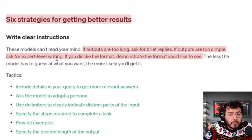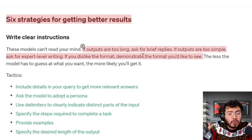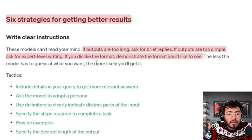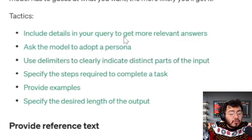For me, rules number one, number three, and number four are the ones everyday users can really focus on. Number one is write clear instructions. They tell you these models can't read your mind — if the outputs are too long, ask for brief replies; if outputs are too simple, ask for expert-level writing; if you dislike the format, demonstrate the format you'd like to see. The less the model has to guess at what you want, the more likely you'll get it. Within this rule, they give you six different tactics.